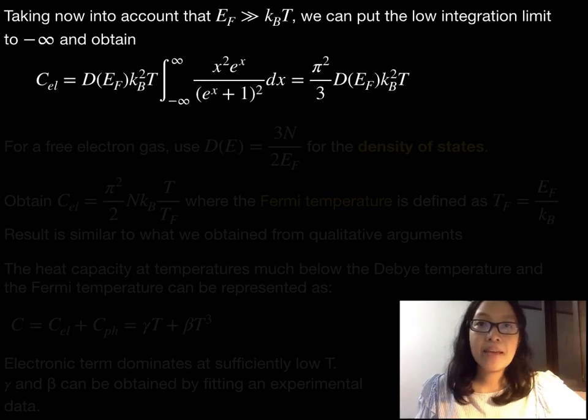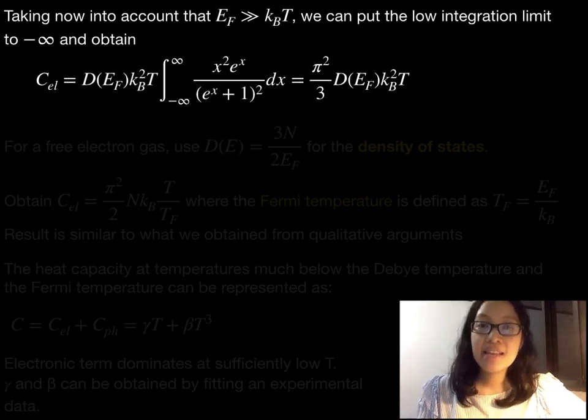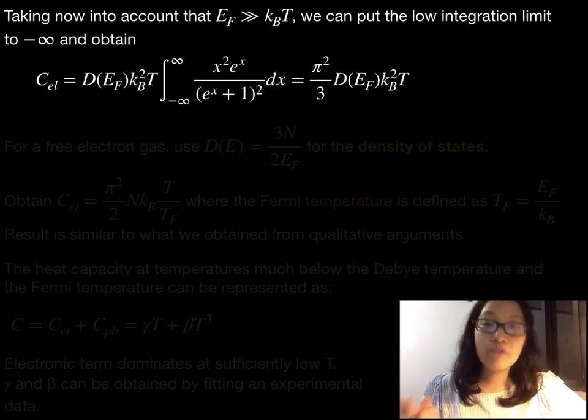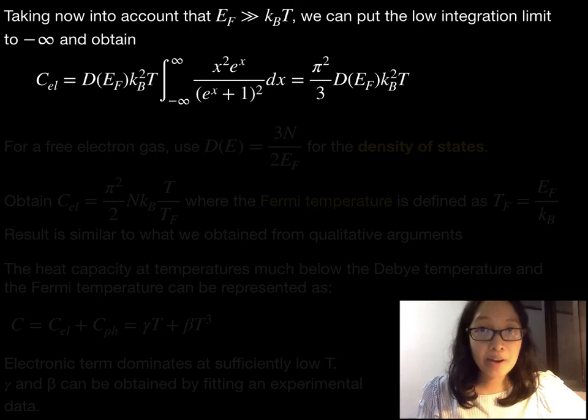We may safely replace the lower limit by negative infinity because the factor e^x in the integrand is already negligible at x equals EF/kBT. If we are concerned with low temperatures such as EF much greater than kBT or EF approximately 100 times kBT, the integral becomes π²/3. Therefore, the electronic heat capacity becomes π²/3 times density of states times kB² times T.